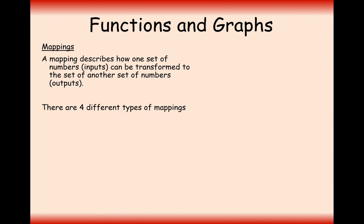Each mapping can be described as one of four different types of mappings: either a one-to-one mapping, a many-to-one mapping, a one-to-many mapping, or a many-to-many mapping.